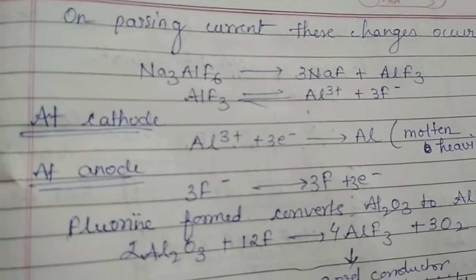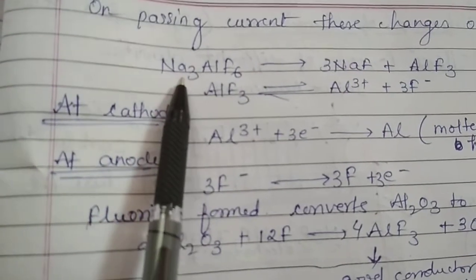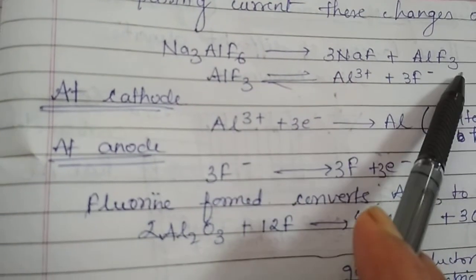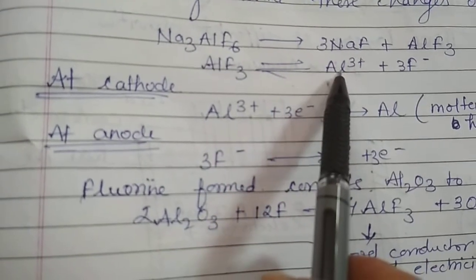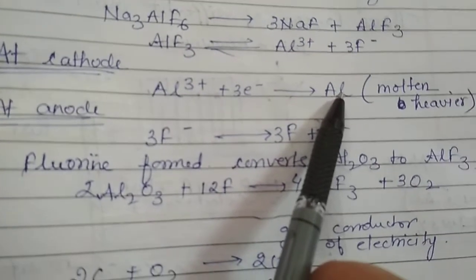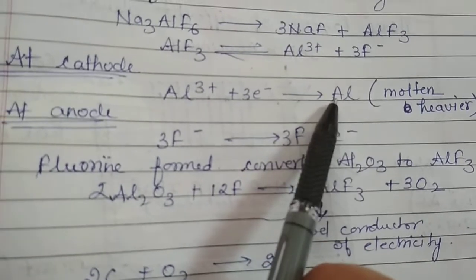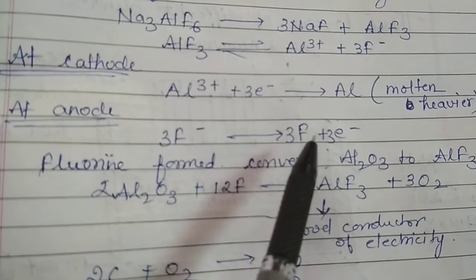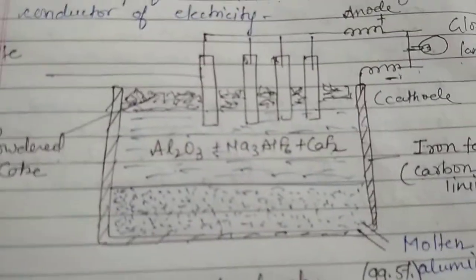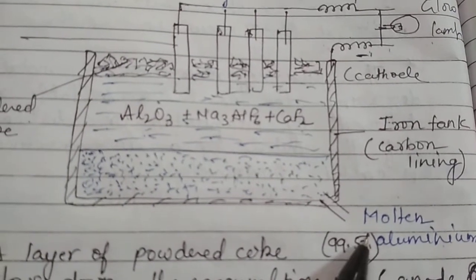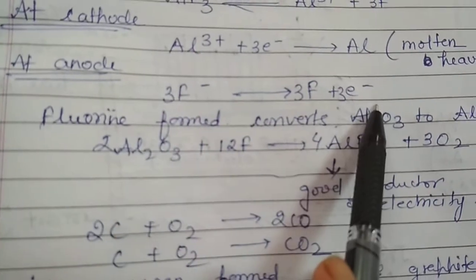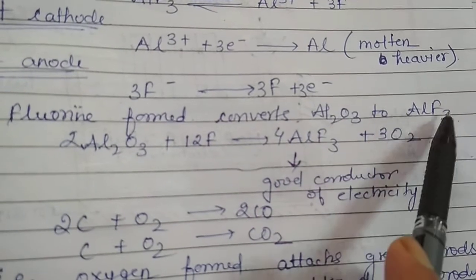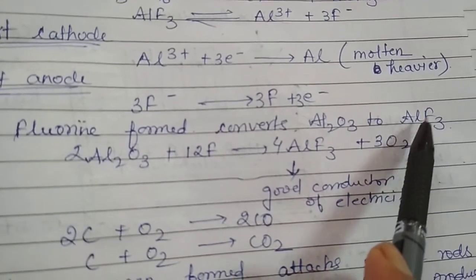On passing current, the cryolite dissociates into sodium fluoride and aluminium fluoride, and aluminium fluoride ionizes to give aluminium ion and fluoride ion. The aluminium ion at the cathode is reduced to give molten aluminium, which — being heavier than the electrolyte — settles at the bottom. As we can see in the diagram, we collect 99.5% pure molten aluminium at the bottom. At the anode, fluoride ion is oxidized into fluorine, and this fluorine converts the rest of the alumina to aluminium fluoride, which is a good conductor of electricity.